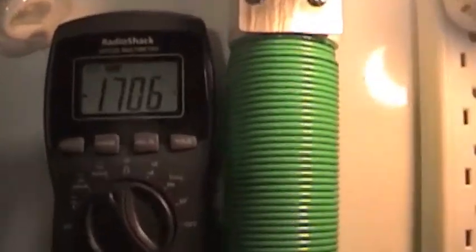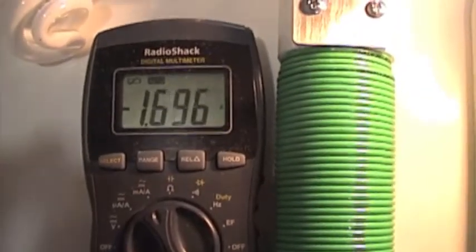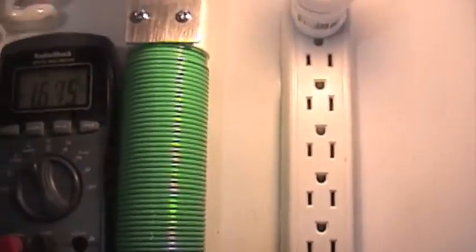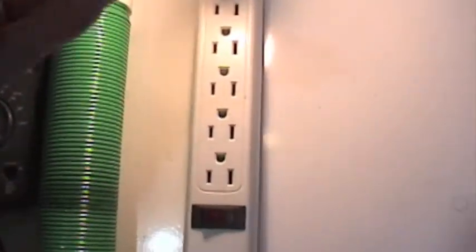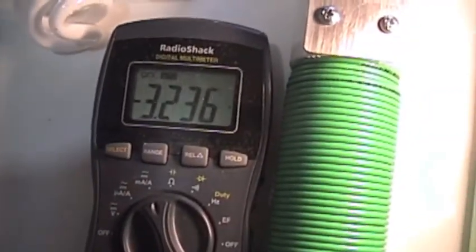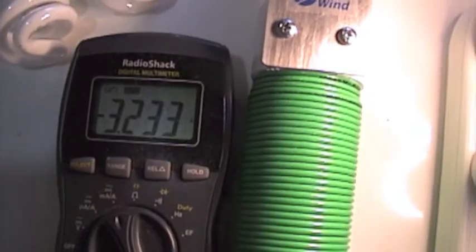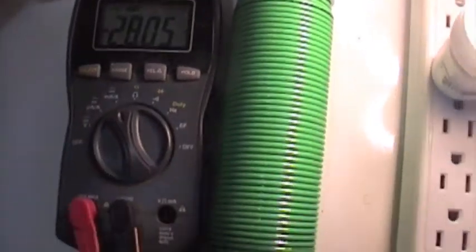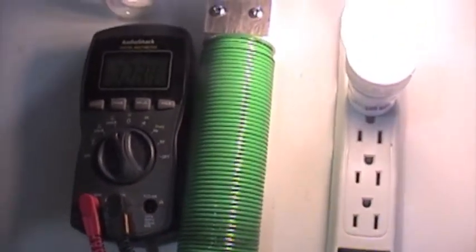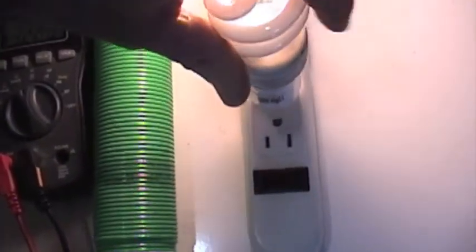I've got my amp meter hooked up backwards, but anyway, it's 1.7. I'm going to put the second one in. So we're at, it's trying to find a happy place. It's somewhere between 2.8 and 3.2. So it's trying to adjust to this load. It's having a hard time. So we'll put in a third.